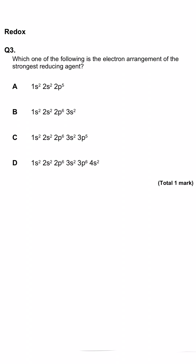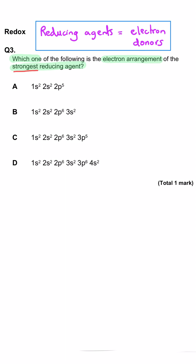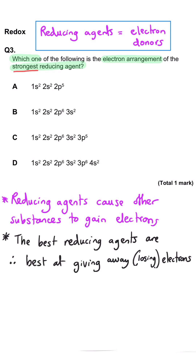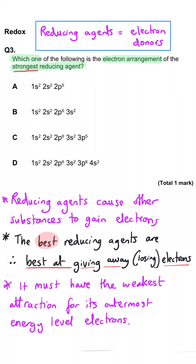Which one of the following is the electron arrangement of the strongest reducing agent? Reducing agents are electron donors because they cause other elements to become reduced, so other elements must be gaining electrons. The element that will be the best electron donor will be the one that lets go of its own electrons most easily, and therefore has the weakest control over its own electrons.